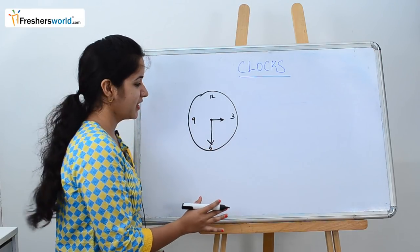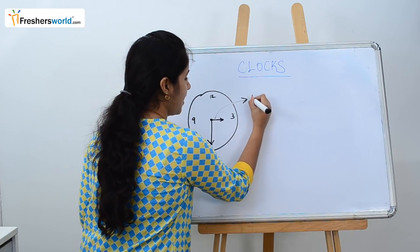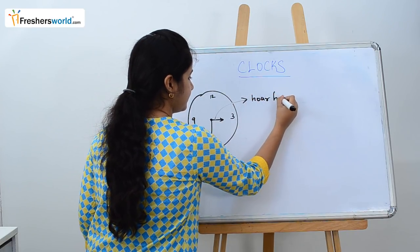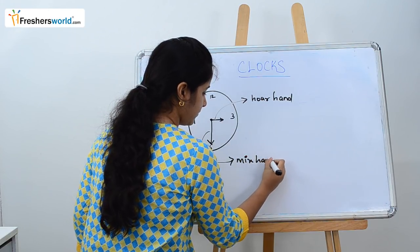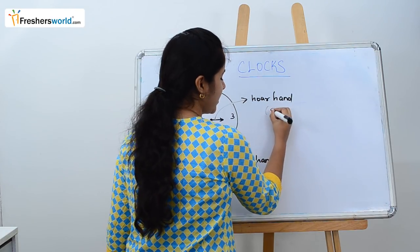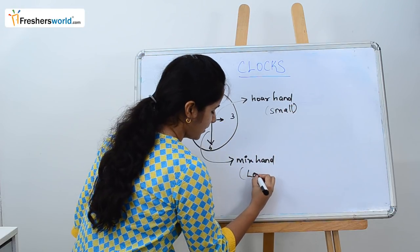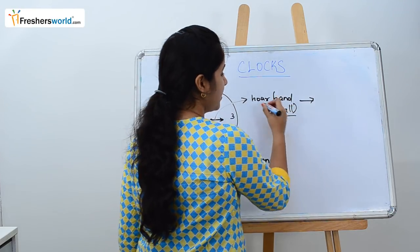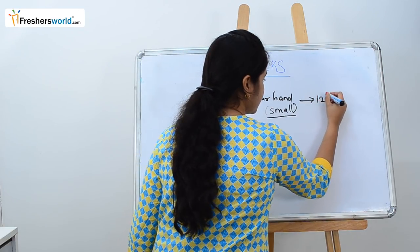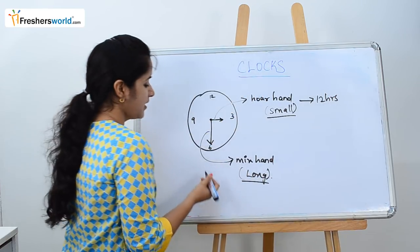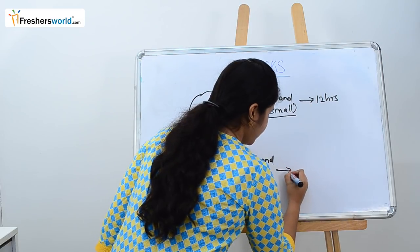This is how a clock looks. This is what we call the hour hand and this is what we call the minute hand. The hour hand is the smaller one and the minute hand is the longer one. The hour hand circulates 360 degrees every 12 hours. Similarly, the minute hand circulates 360 degrees every 60 minutes.